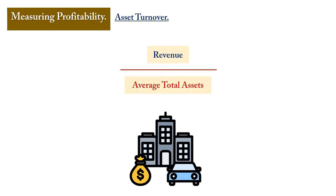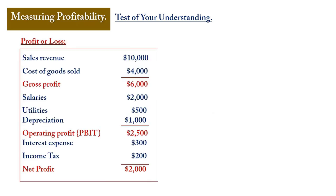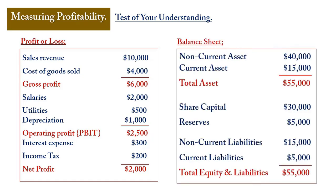The formula for asset turnover is revenue divided by average total assets available, because without assets a business cannot generate revenue. The capital invested is used for asset acquisition, so if the revenue resulting from a new investment is not appreciable, that investment can be deemed improper. Let's now test our understanding using a profit and loss statement showing sales, cost of goods sold, gross profit, salaries, utilities, depreciation, operating profit, interest expense, income tax, and net profit.